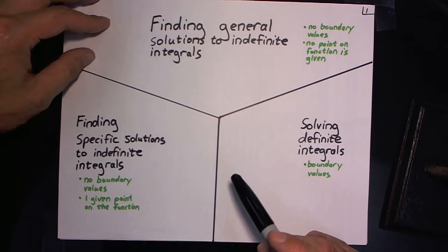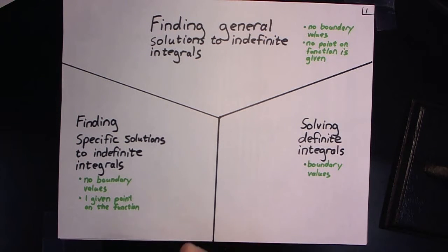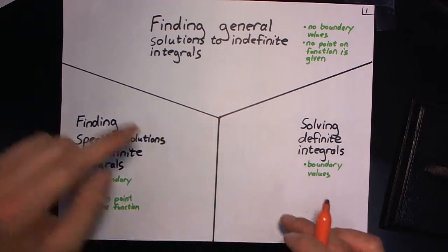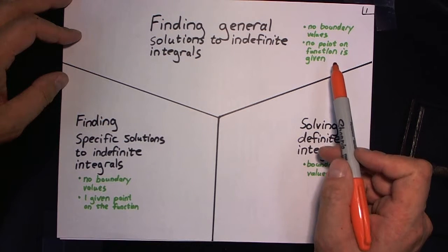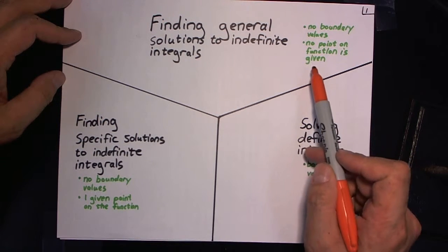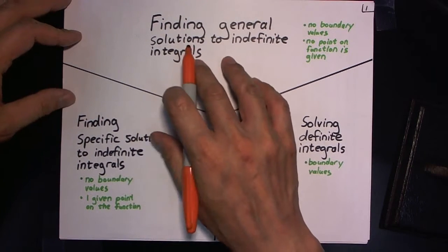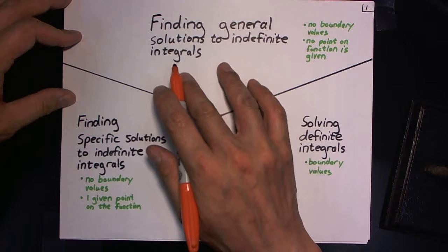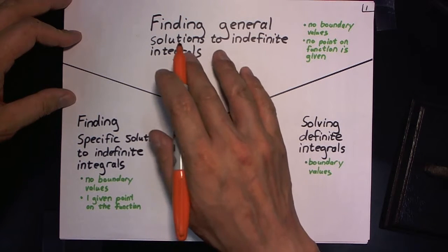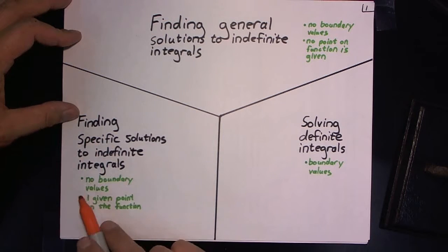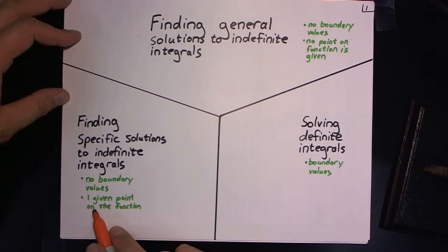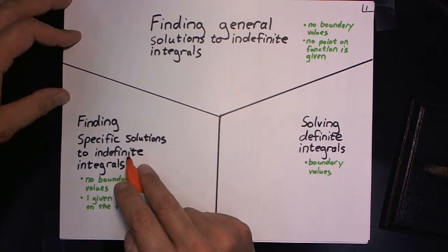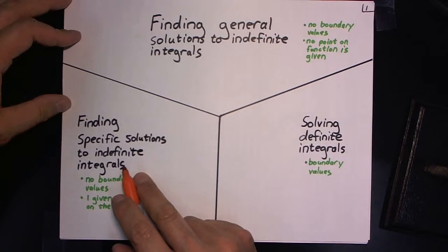To give you a few easy-to-follow instructions on how to know which of these three operations you're doing: if you have no boundary values and there is no point on the given function or no point on the final function is given, then you're definitely just getting the general solution to the indefinite integral, and that's going to be a function that includes the plus c part. If you still don't have boundary values but you do have one given point on the final function, then chances are you're going to be expected to find the specific solution to an indefinite integral.